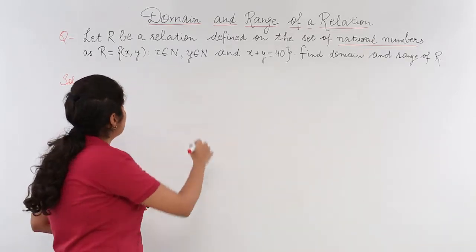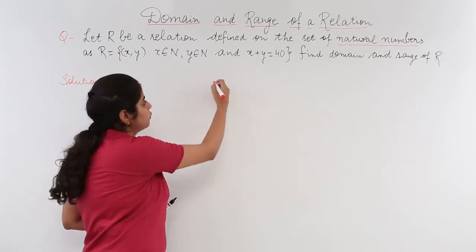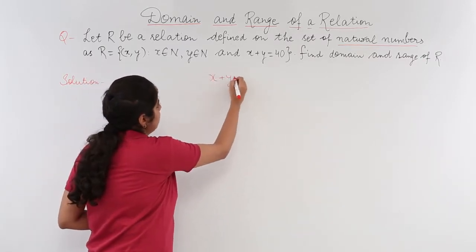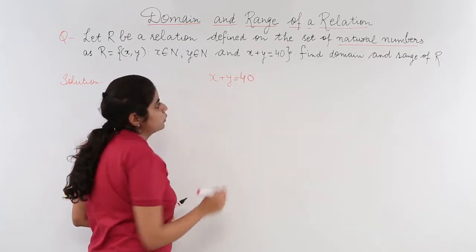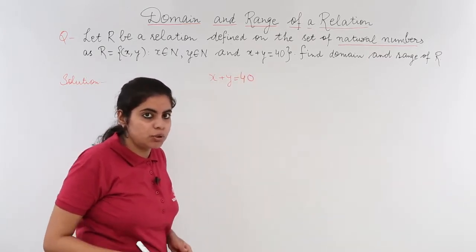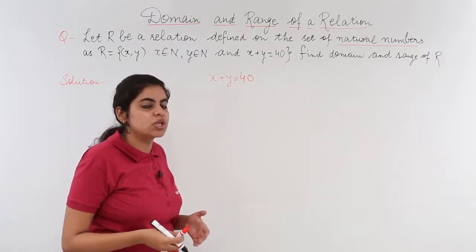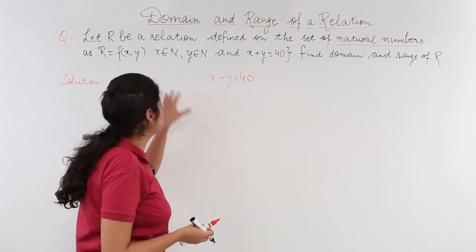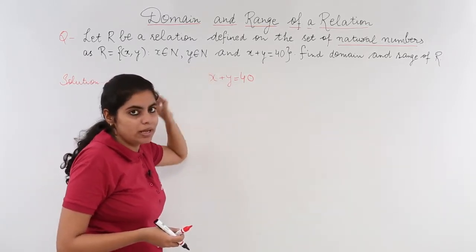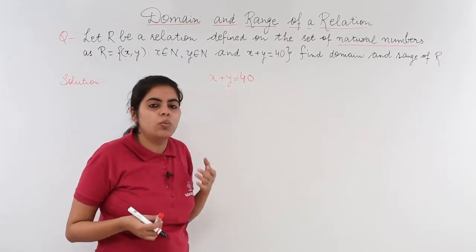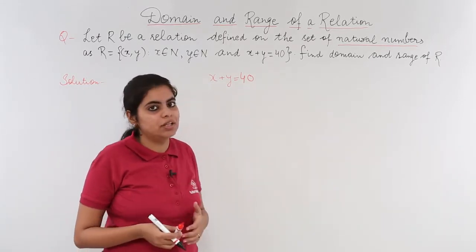Let's see. I have the relation as x+y=40. I'll be writing it again: x+y=40. Now, what do I have to do? I have to take up different values of natural numbers accordingly where x is n, y is n. I need domain and range.